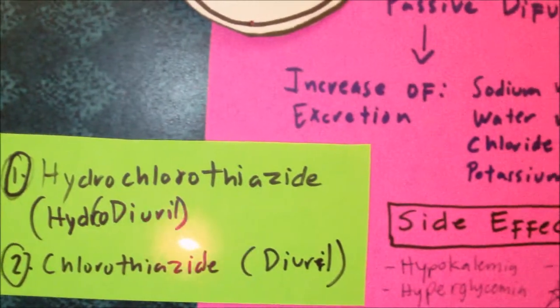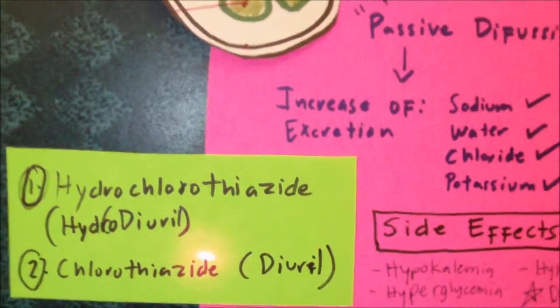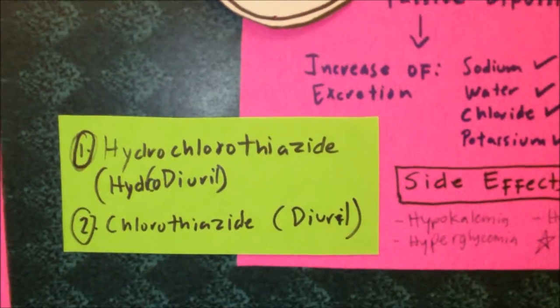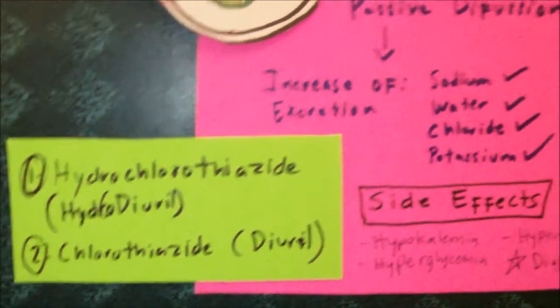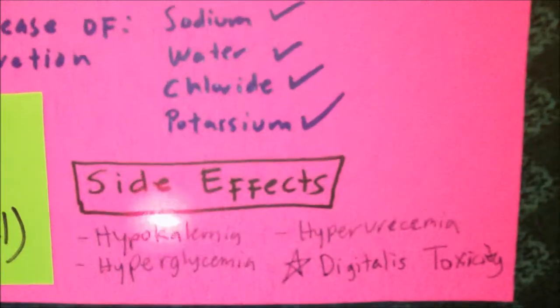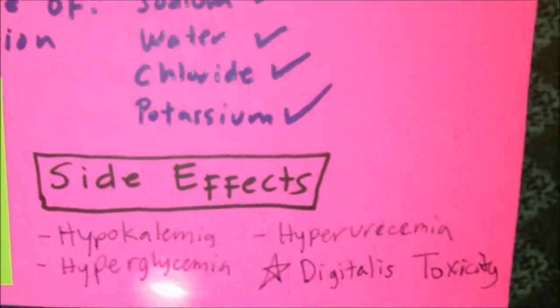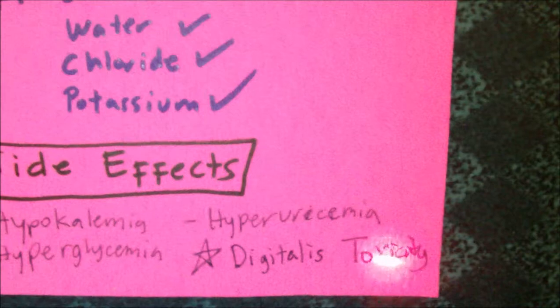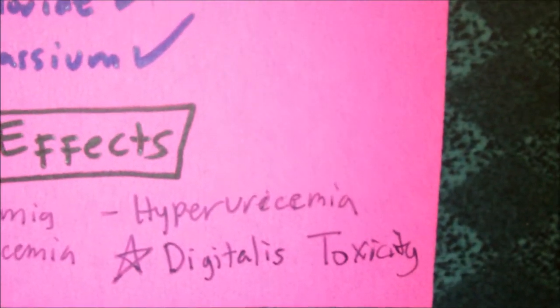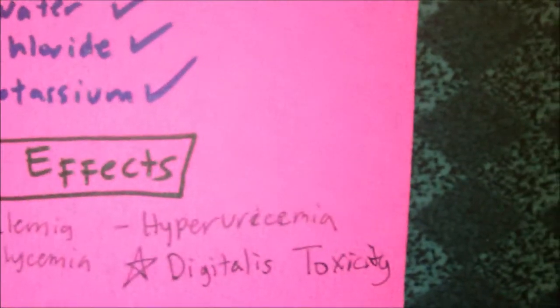Hydrochlorothiazide is usually used in treatments of hypertension and edema, and also with congestive heart failure. Side effects commonly associated with hydrochlorothiazide would include hypokalemia — since we're losing potassium — hyperglycemia, and hyperuricemia. So we have to be careful when we give this drug to patients suffering from diabetes, gout, or especially patients who are taking digitalis.